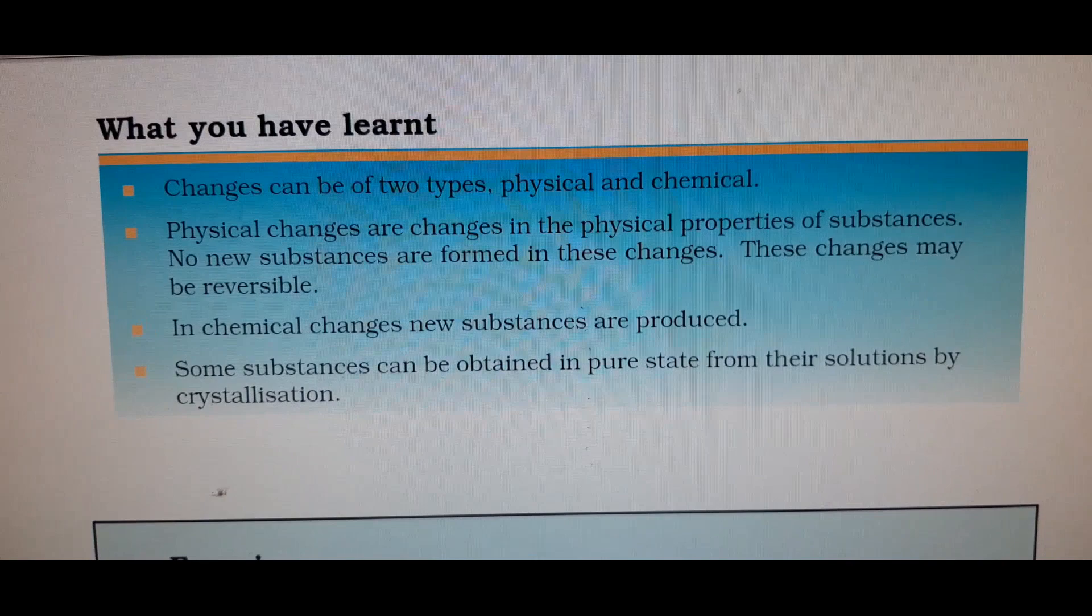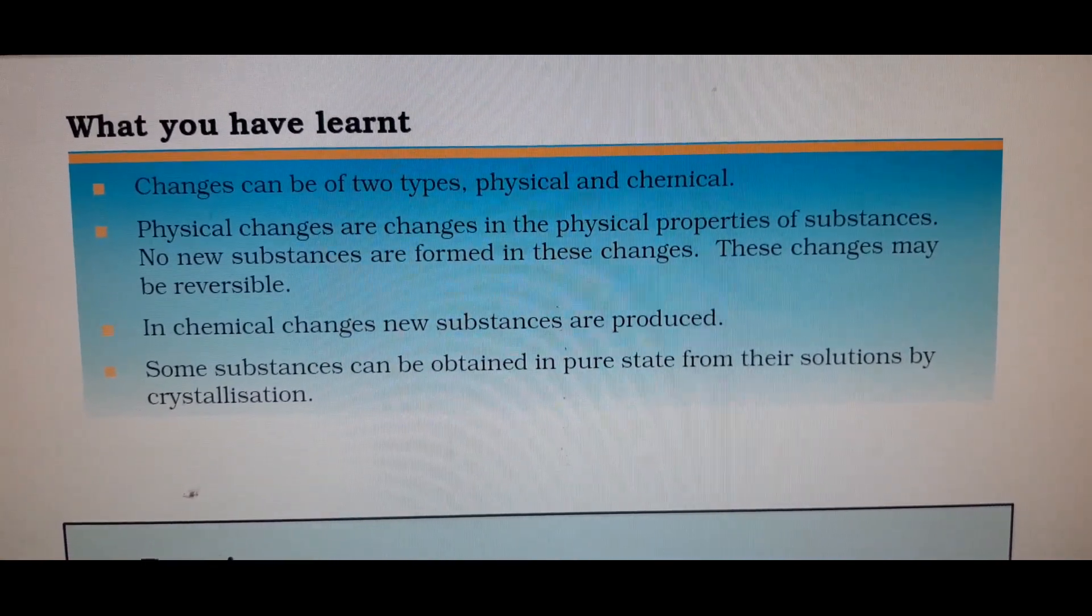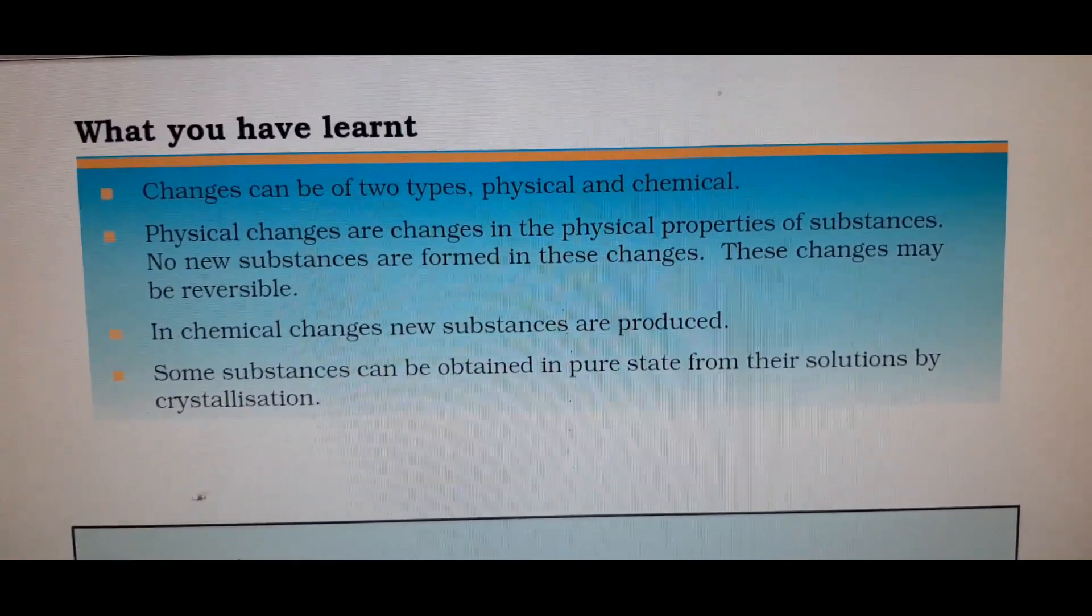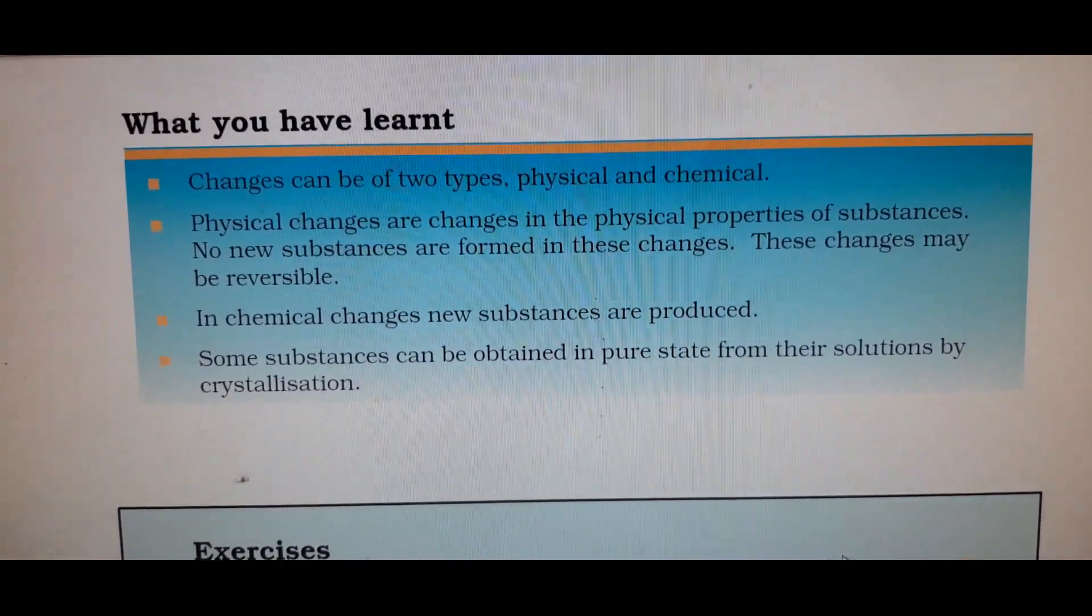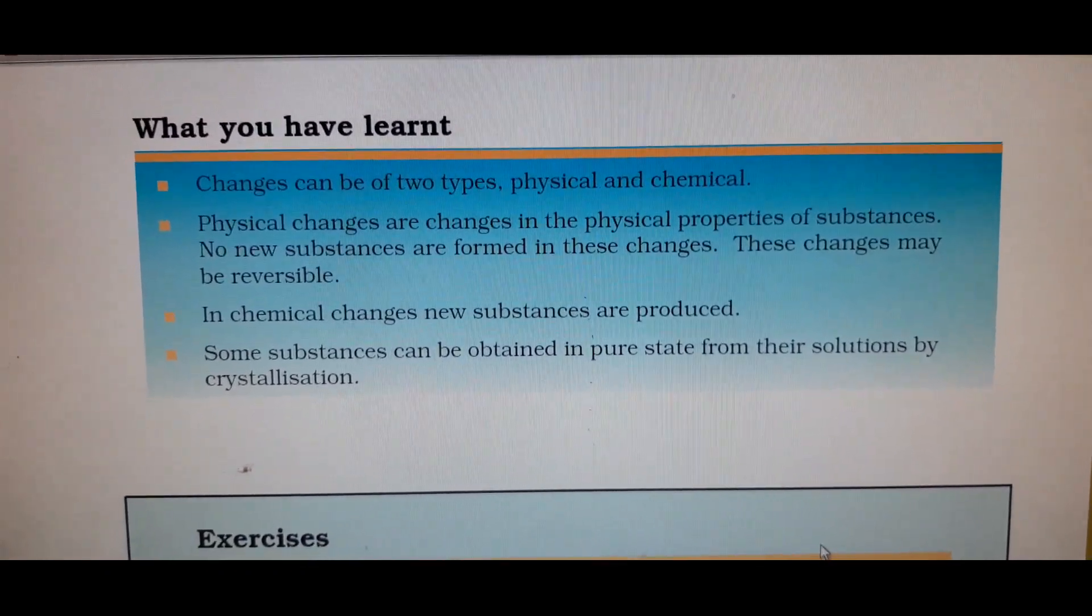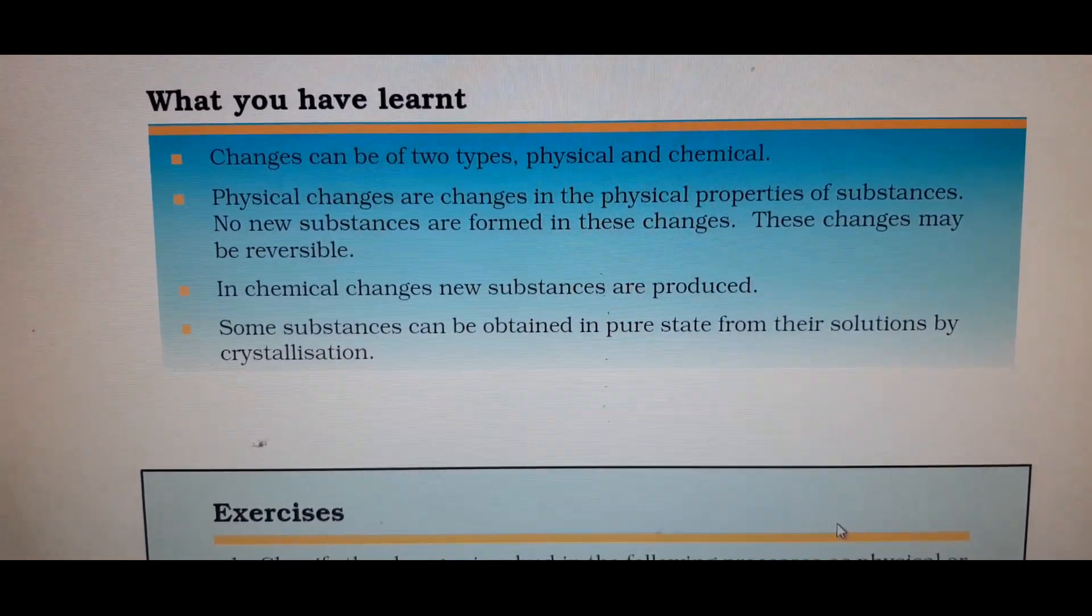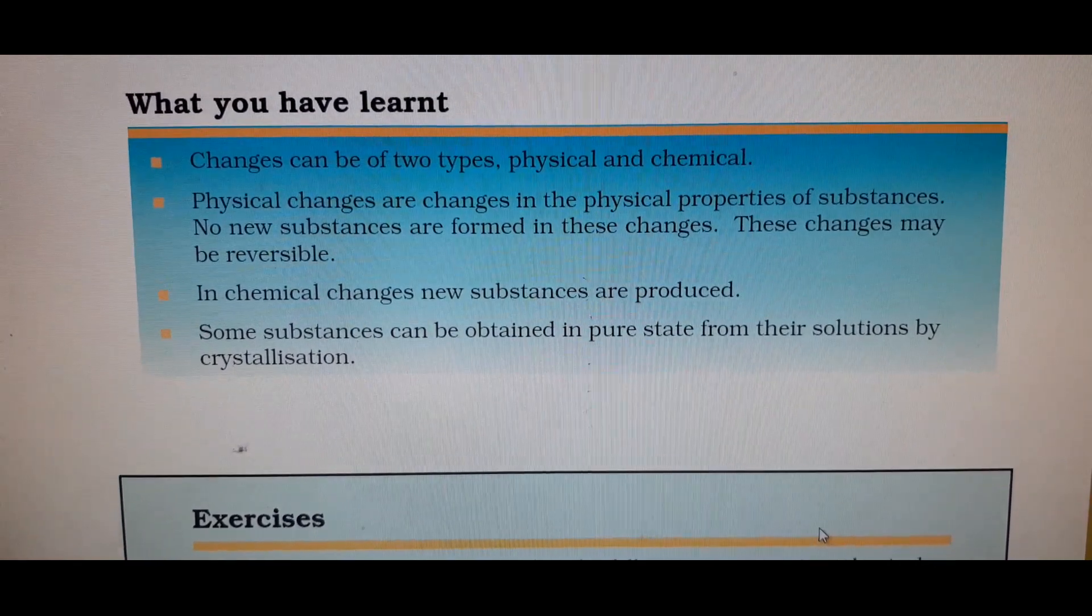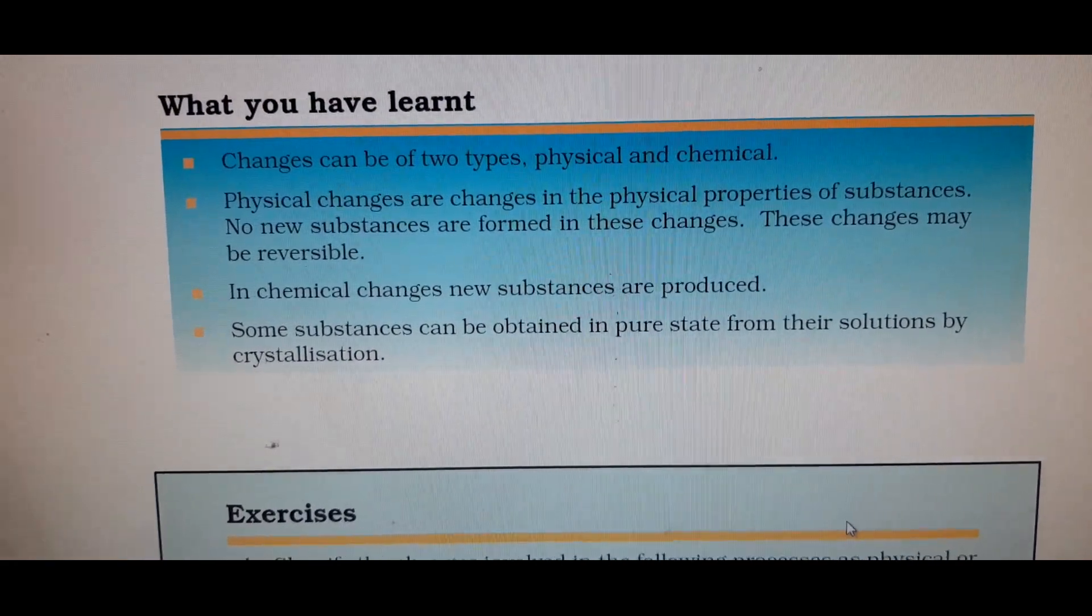Number 1, changes. We have learnt that there are two types of changes: physical changes and chemical changes. Physical changes are changes in the physical property of a substance and no new substances are formed. They may be reversible or they may be irreversible also.